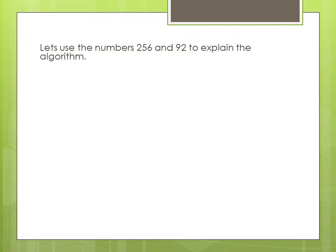Let's use the numbers 256 and 92 to explain the algorithm as we find their greatest common divisor. So first we use these numbers and put it in this form: 256 equals 92 times a plus b.